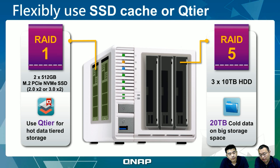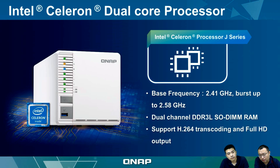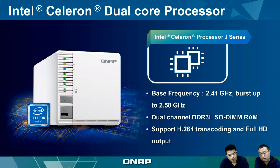Here's an example of the best investment setup for the TS-351: on the front, set up RAID 5 with three 10 TB hard drives to get 20 TB of storage for cold data. On the SSD side, set up RAID 1 with high-performance NVMe SSDs and use Qtier so that hot data is always served with minimum latency. The Intel processor can burst up to 2.58 GHz, supports dual-channel DDR3L memory up to 8 GB, and provides hardware-accelerated transcoding and HDMI output up to 1080p.